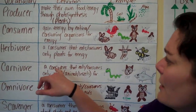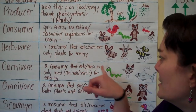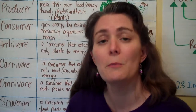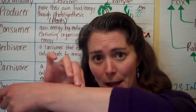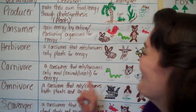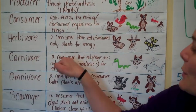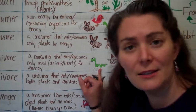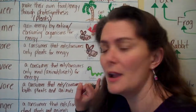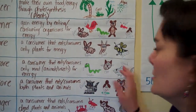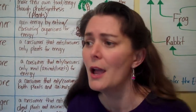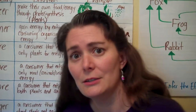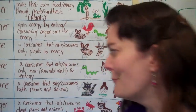Carnivores are a type of consumer that eats or consumes only meat. What is meat? Meat is animals, insects, flesh — that's meat. So a carnivore consumes meat for energy. What eats meat? What eats other animals or insects? Snakes do, cats do, sharks do. Wolves, dogs — domesticated dogs typically will eat mostly meat if they have the chance.